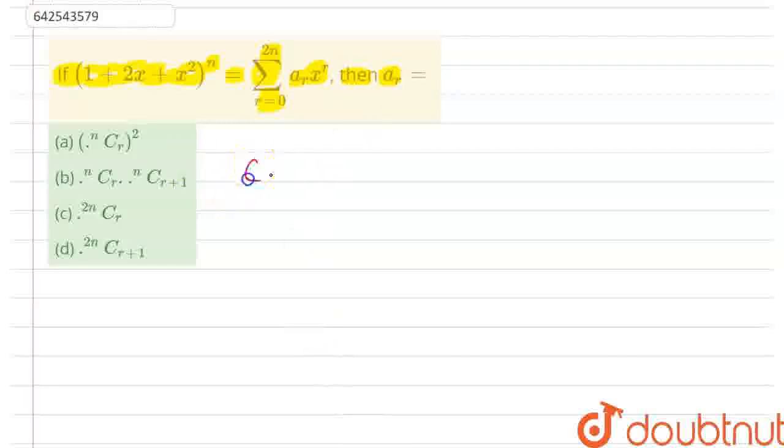Now, we know that (a + b)² equals a² + 2ab + b². So similarly, we can say that (1 + x)² will be equal to 1² that is 1 plus 2 times 1 times x that is 2x plus x².